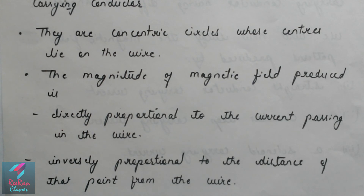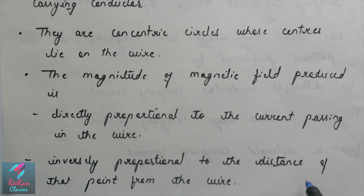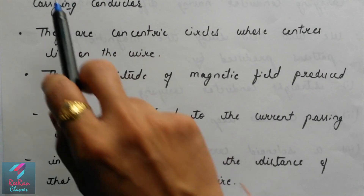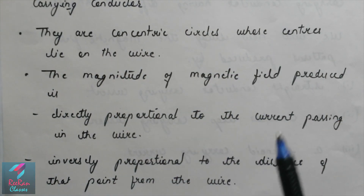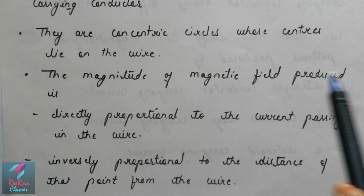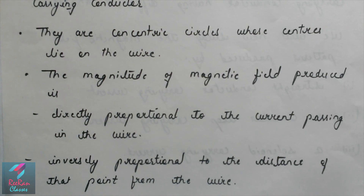So in this video, we have established the relationship between electricity and magnetism, and proved that current flowing through a wire produces a magnetic field. We have studied different magnetic field patterns and discussed the magnetic field pattern due to a straight current carrying conductor. That's all for this video. I hope you understood it. Thank you. Bye-bye. Take care.